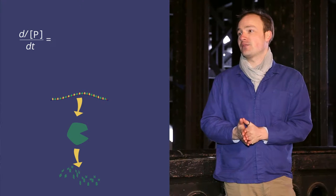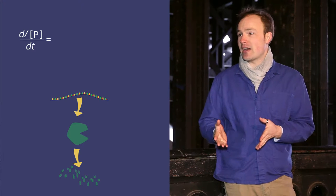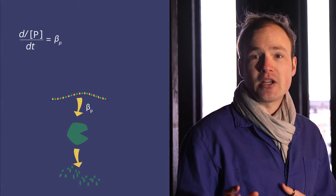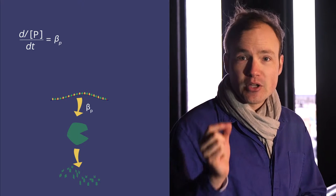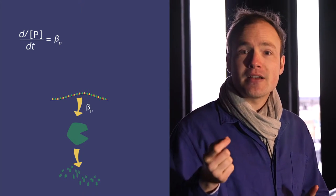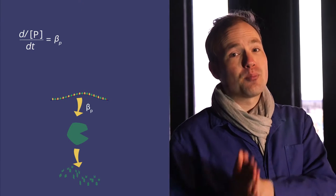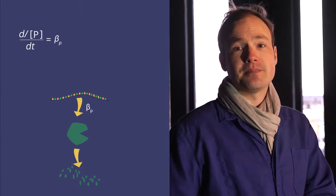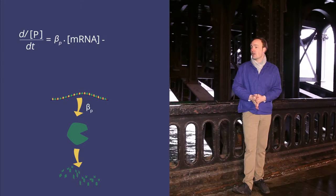Protein is made from mRNA, and we'll assume that each mRNA is able to generate protein at a constant rate. We call this rate beta, and we use the subscript p to remind ourselves that we're talking about the protein production rate, not that other beta that we used for mRNA.